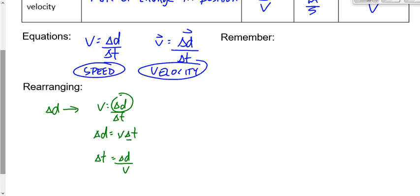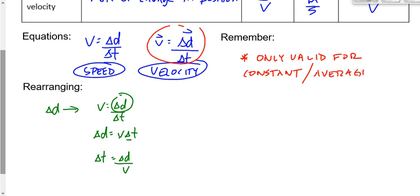These are the three forms of the equation that you're going to end up using today and going forward. Now, there is one thing that I want you to remember here. These equations, both of these equations, only one of which, by the way, is on your data sheet. This one is on your data sheet. But really, how hard is the other one to remember? Remember that these are only valid, both of these are only valid for constant or average speed or velocity, depending on the equation.